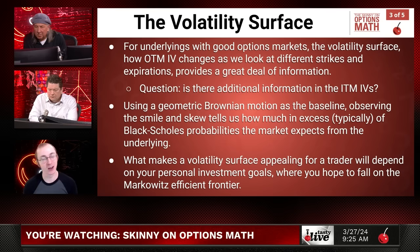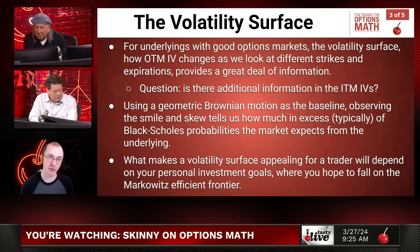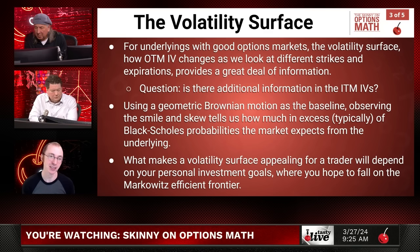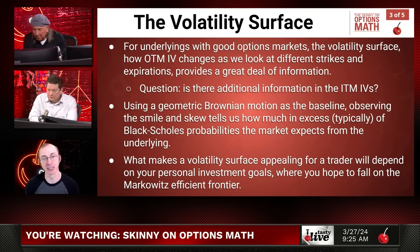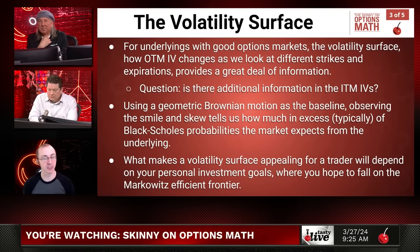One homework question for people at home - they can send me an email if they think they figured it out. The volatility surface is formed by looking at the out-of-the-money IVs only. But if you look at your option sheet, you've got in-the-money IVs across the way - you've got puts, you've got calls, and they don't always fully line up. So what additional information, if any, can you get by also considering the in-the-money IVs and how those change away from the spot price? It's an interesting question to think about.